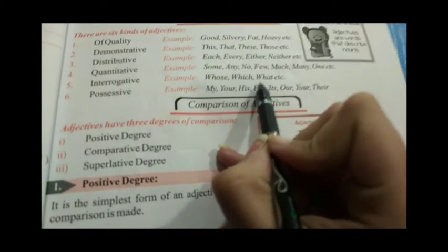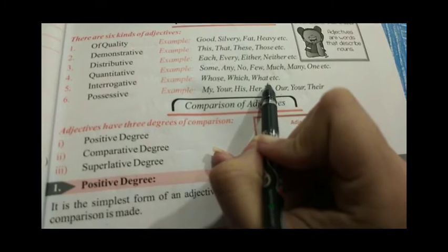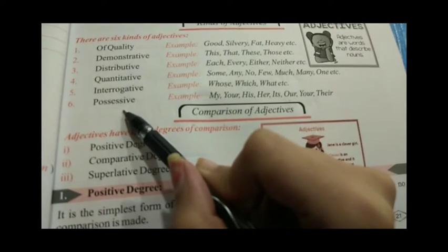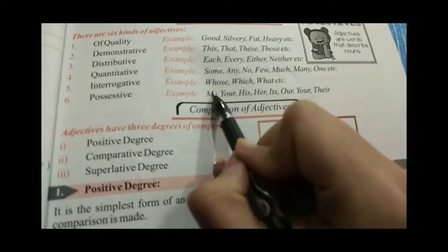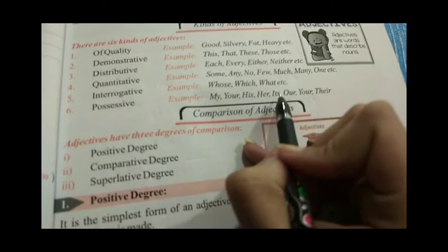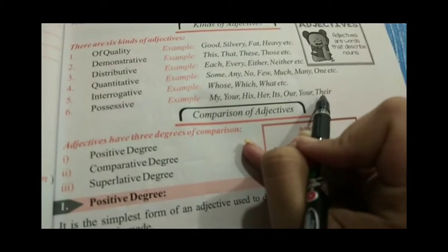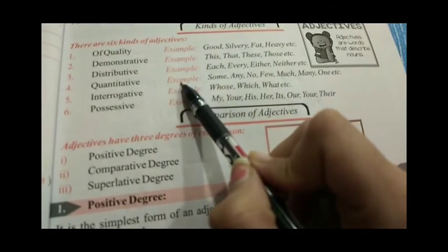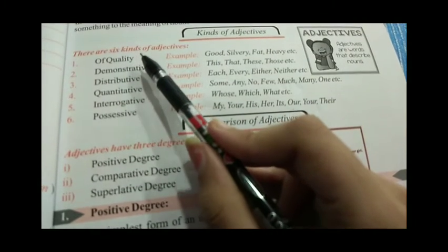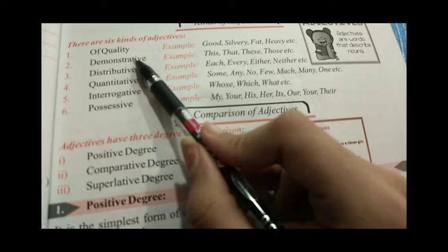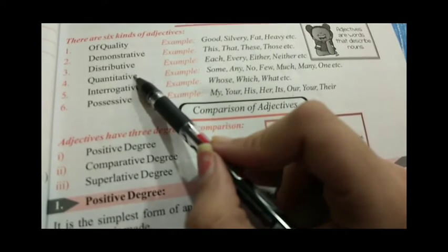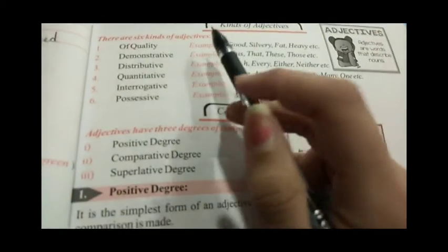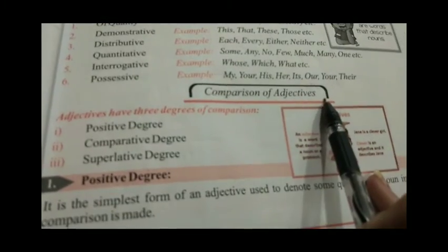The fifth is interrogative adjective — when we are asking a question, तो उसके लिए हम यूज़ करते हैं whose, which, what, how, where, etc. The sixth is possessive adjective, जिसमें आता है my, your, his, her, its, our, your, and their. So we have studied about six kinds of adjectives: adjective of quality, demonstrative adjective, distributive adjective, adjective of quantity, interrogative adjective, and possessive adjective.